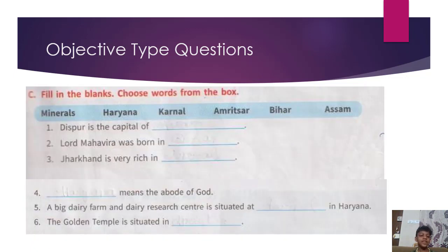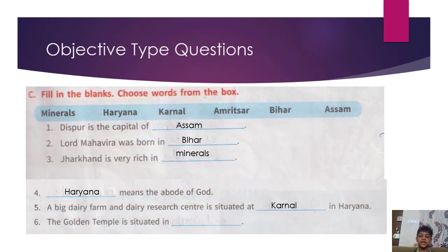Bihu — Assam. C. Fill in the blanks. Choose words from the box. Dispur is the capital of Assam. Lord Mahavira was born in Bihar. Jharkhand is very rich in minerals. Haryana means the abode of God. A big dairy farm and research center is situated in Karnal in Haryana. The Golden Temple is situated in Amritsar.